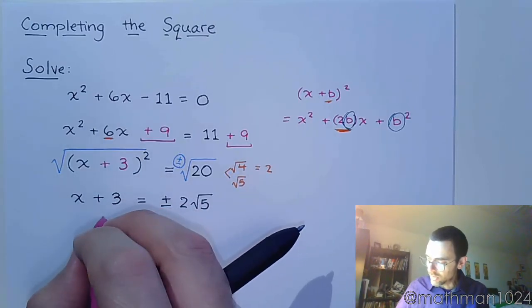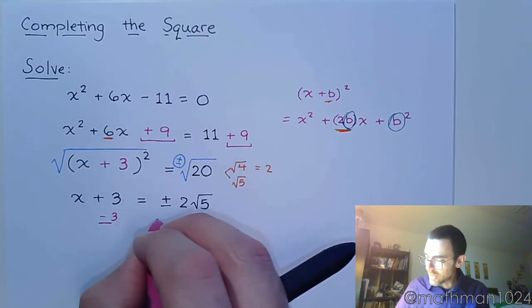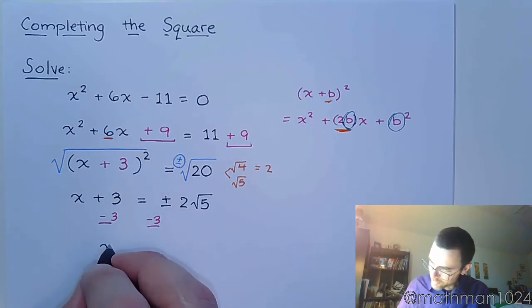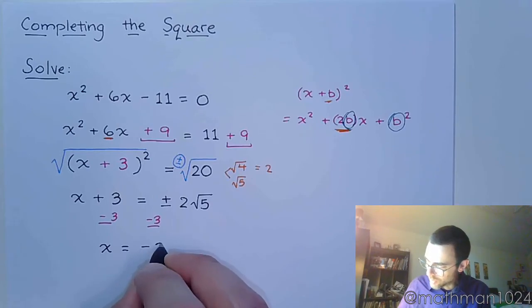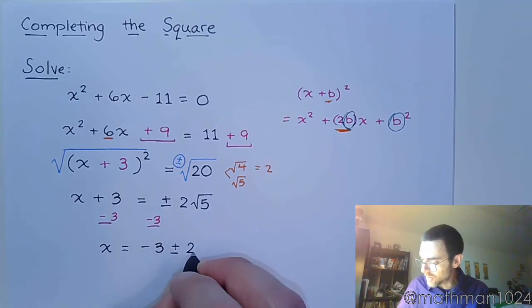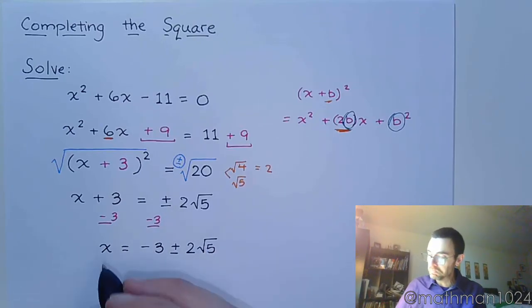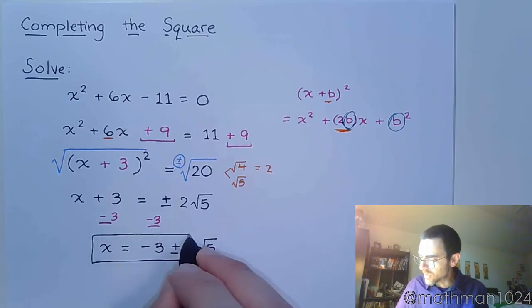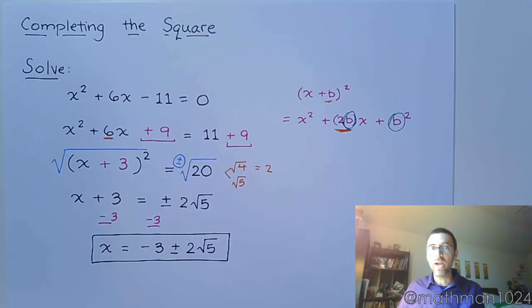And we finish solving this equation for x by subtracting 3 to the other side. So x is equal to -3 ± 2√5. Again this is not the prettiest of answers. This is definitely not something that we would have gotten from factoring. It is something that we could have gotten from the square root property if it were set up that way originally, but it wasn't.